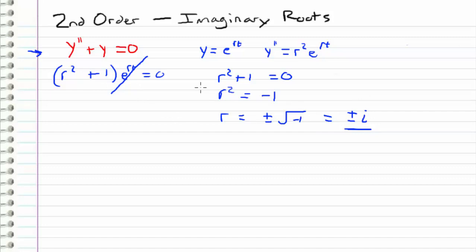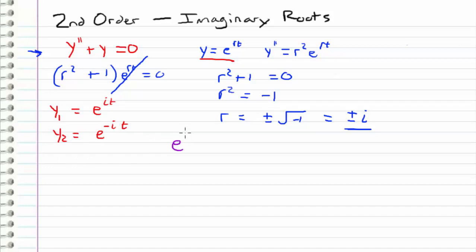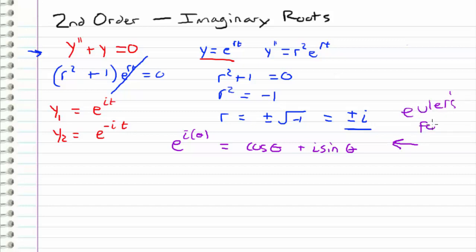Plugging those roots back into our assumed solution, we get two solutions: y1 equals e to the i times t, and y2 equals e to the negative i times t. Instead of expressing our solution as imaginary components, we want to express it as a real function. To do that, we make use of Euler's formula, which says e to the i theta equals cosine theta plus i times sine theta. This can be derived using the Taylor series expansion for e to the x, cosine, and sine.